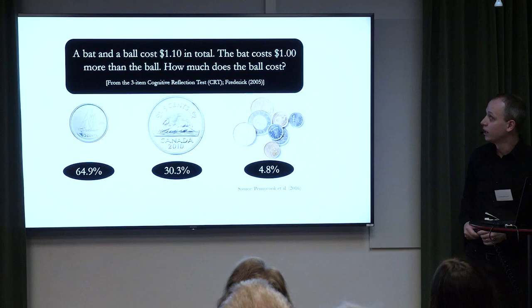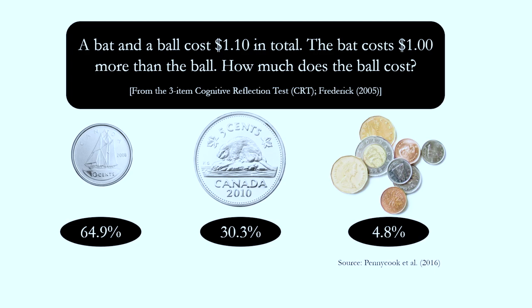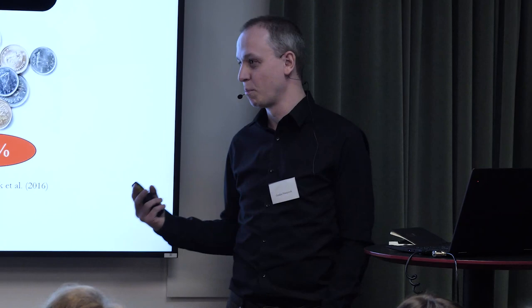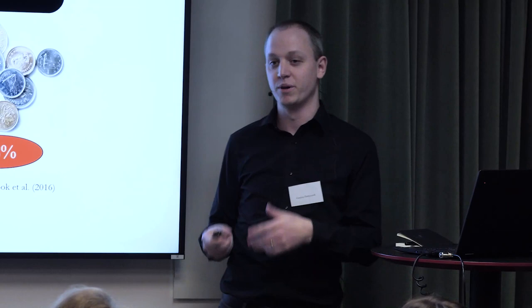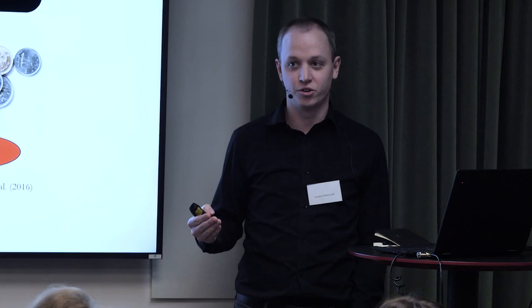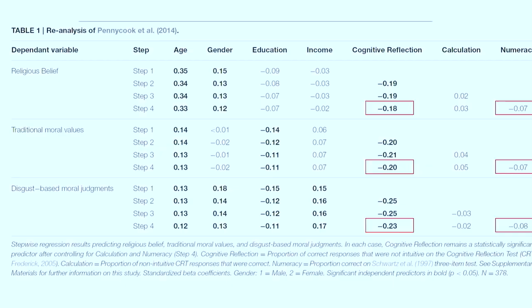What's interesting about this problem is there's an intuitive answer that's wrong. You have to be smart enough to do the math, motivated enough to solve it, and you have to check your answer — 10 cents pops into your head and you have to stop and think. This task predicts a lot of things over and above numeracy, so it doesn't seem to be only numeracy. We use seven different items — reworded versions of the original three plus four from a different test. The newer items are less numeracy-based; for example: 'If you're running a race and pass the person in second place, what place are you in?' — second place, not first.